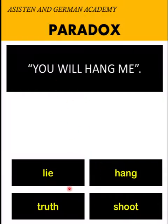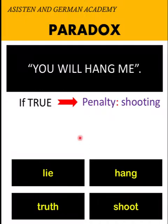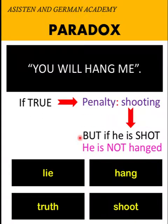First, if the statement is true, that means the penalty should be shooting according to this table. So the prisoner will be shot. But if the prisoner was shot, that implies that he is not hanged, because he was shot.